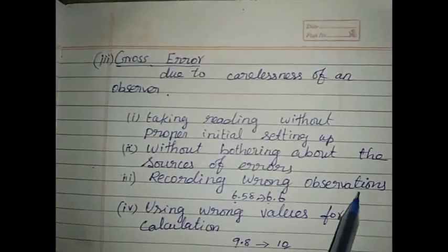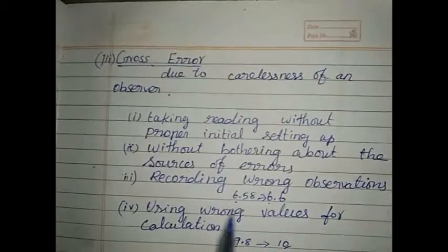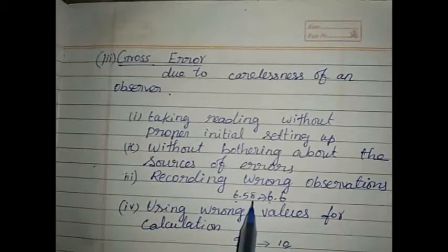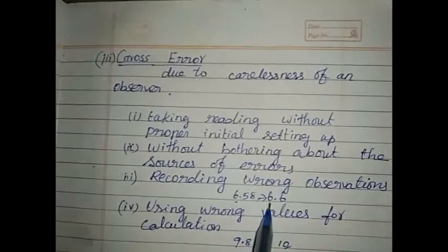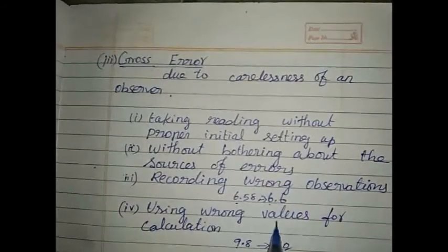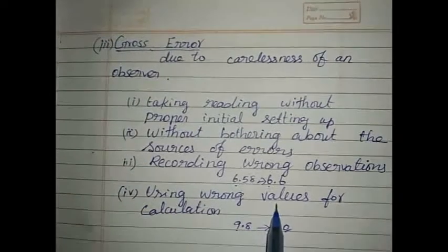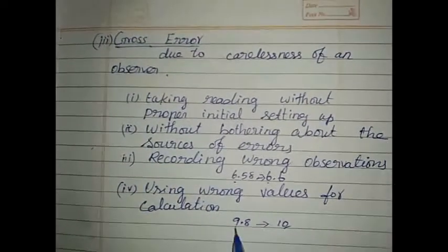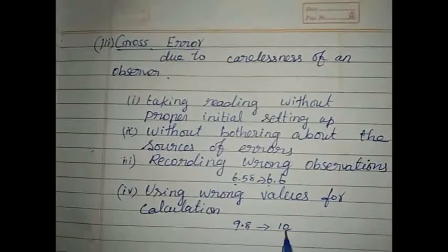For example, instead of 6.58, the observer is using 6.6. Fourth one, using wrong values for calculation. This also, instead of 9.8, the observer is using 10.